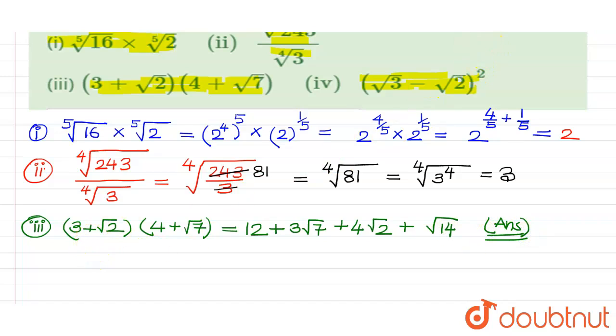Now let's come to the fourth one. Root 3 minus root 2 whole square. So we will use the formula of a minus b whole square, which is equals to a square plus b square minus 2ab. So we get 3 plus 2 minus 2 root 3 multiplied by root 2, which is equals to 5 minus 2 root 6.